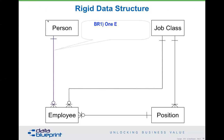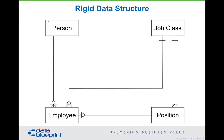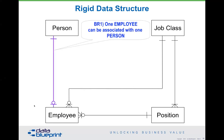Here's a data model with a fairly rigid data structure. One employee can be associated with one person. It's a little subtle — notice in the bottom left where employee is. I'm going to change that piece to make it a little bit more restrictive. One employee can be associated with one person. After all, you wouldn't want two people functioning as one employee — or maybe you would. What if your organization supports the concept of moonlighting? In this case, a person can be an employee on Mondays, Wednesdays, and Fridays, and a different person can be an employee on Tuesdays and Thursdays.